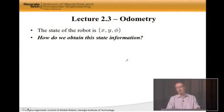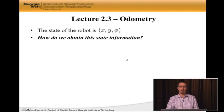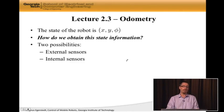Odometry is the means by which we can obtain this pose information. And the question is, how do we actually get the state or the pose of the robot? Well, there are a number of different ways of doing it, but at the end of the day, we absolutely need sensors. And there are really two possibilities here.